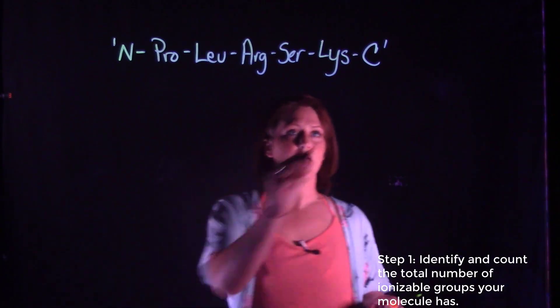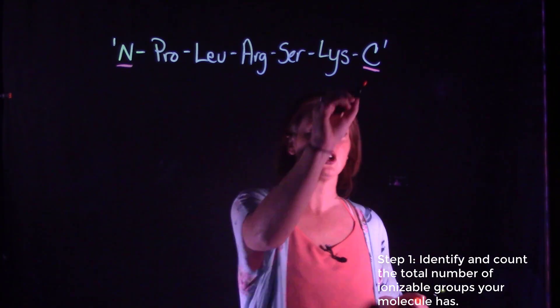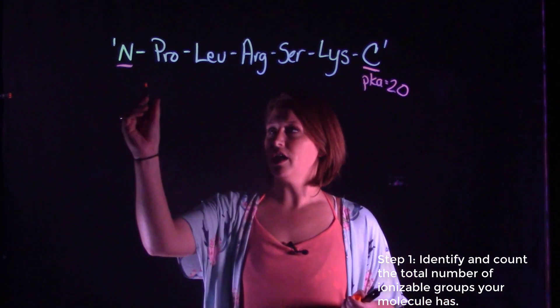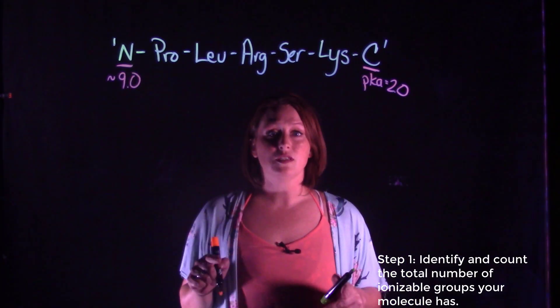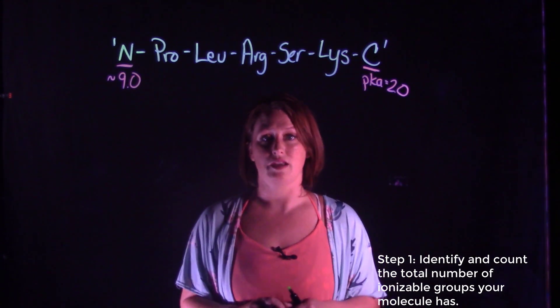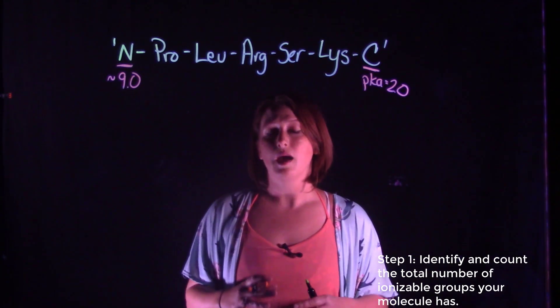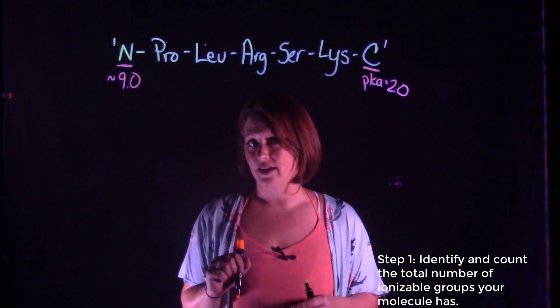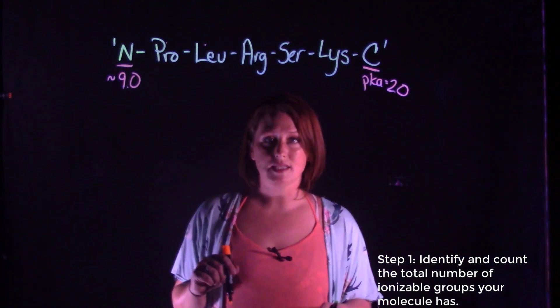Remember in step one, we need to first identify all of the ionizable groups that we have and identify their pKa's. Obviously we have our C-terminus and our N-terminus, both of which have ionizable groups. The C-terminus pKa is effectively 2.0, our N-terminus has a pKa of approximately 9.0. The next thing we need to do is look at the R groups of the amino acids in the polypeptide and ask ourselves whether or not they have ionizable groups. Remember, any of our polar and nonpolar amino acids such as proline, leucine, and serine do not have ionizable groups.